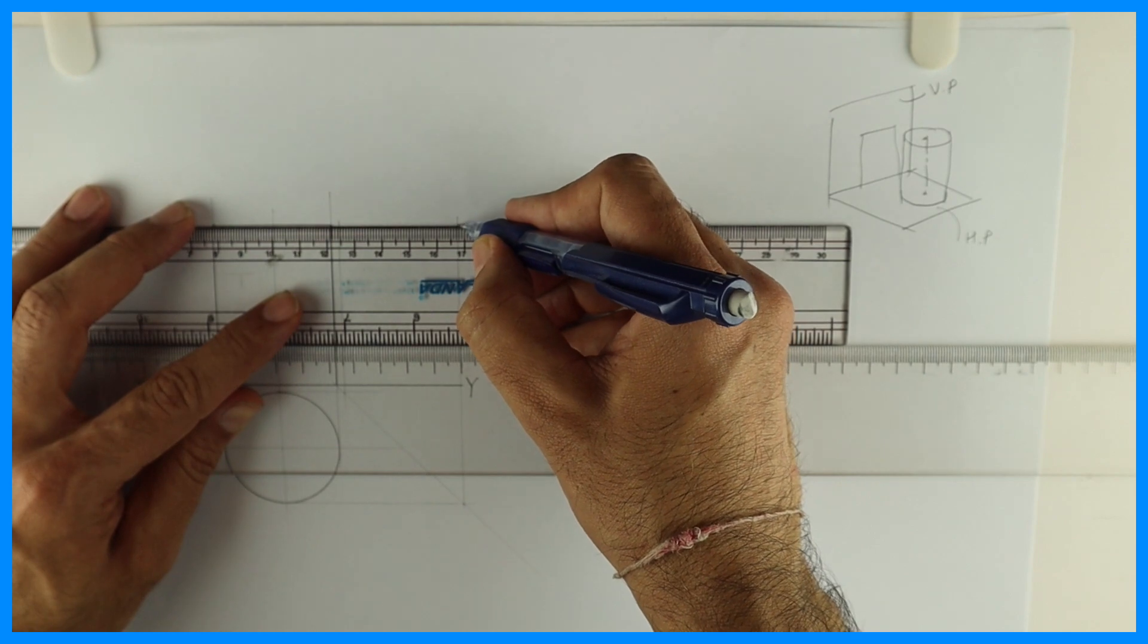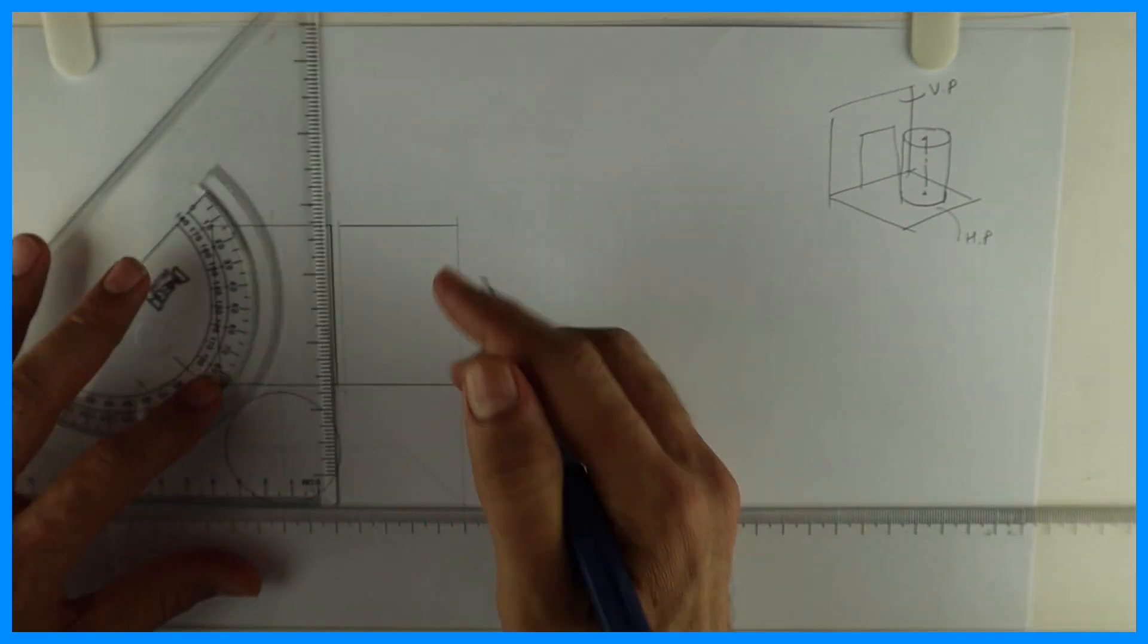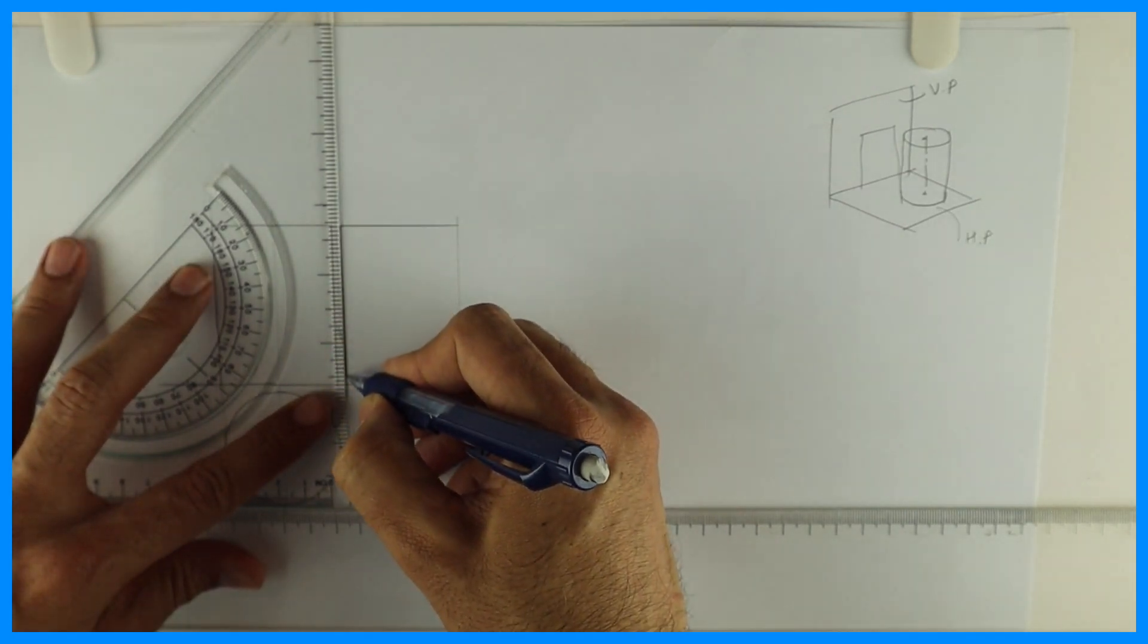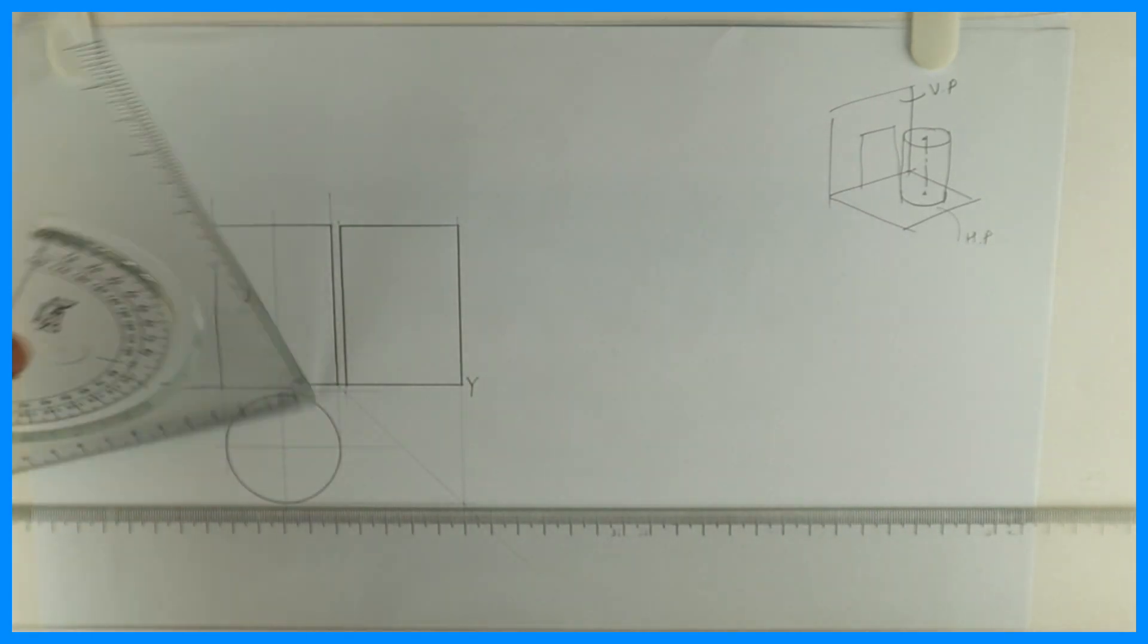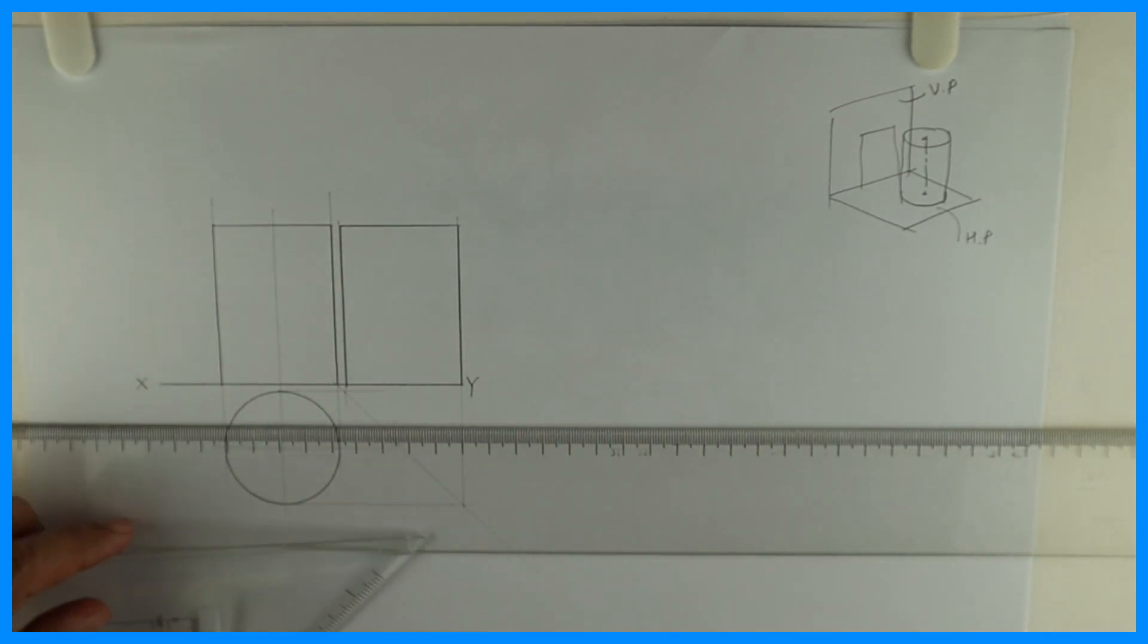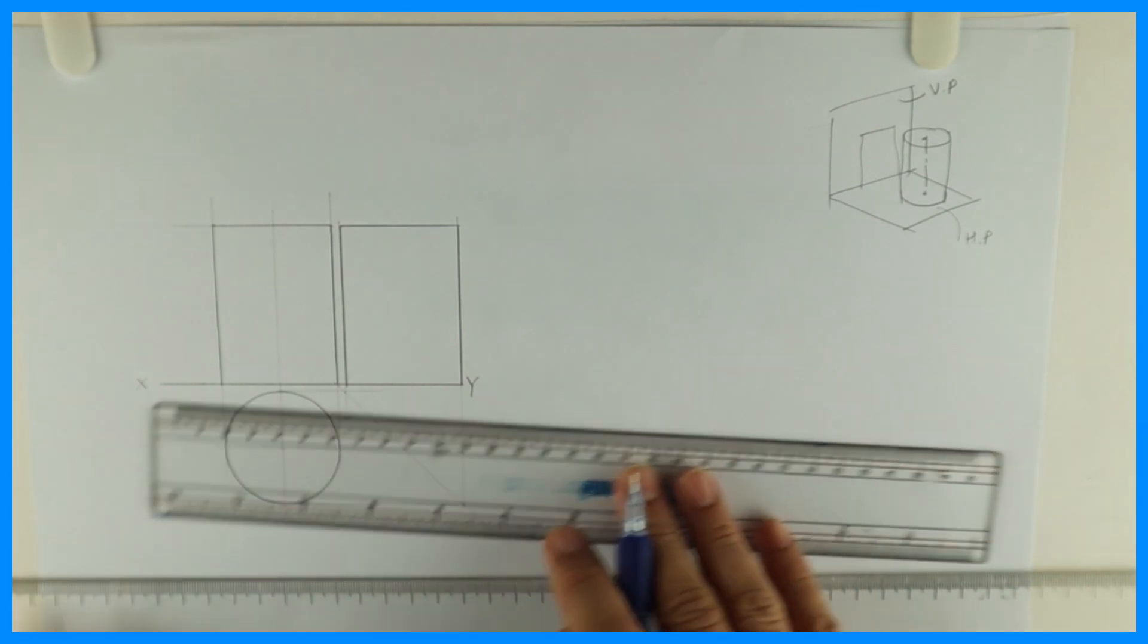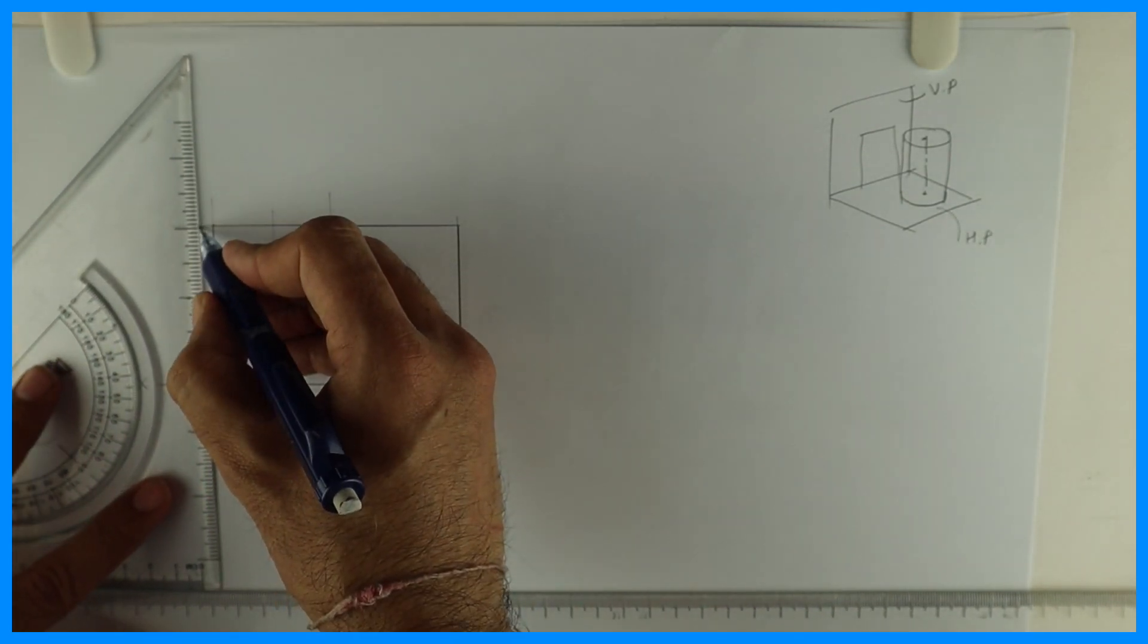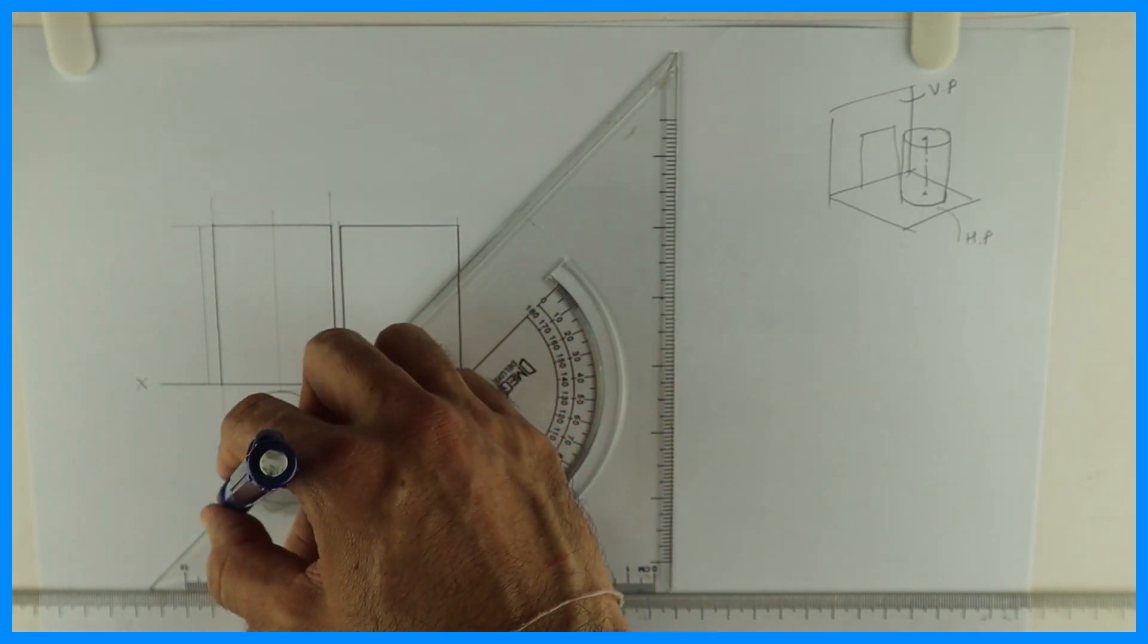If you want to draw a center line you can draw center line in the middle. I'm doing dimensioning - height is 60 and diameter is 42.